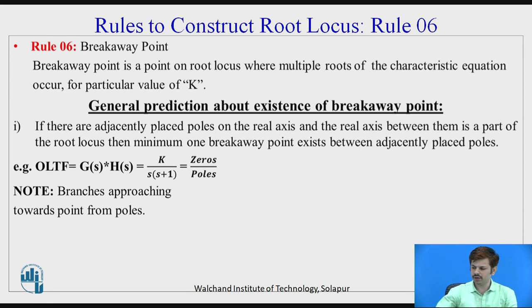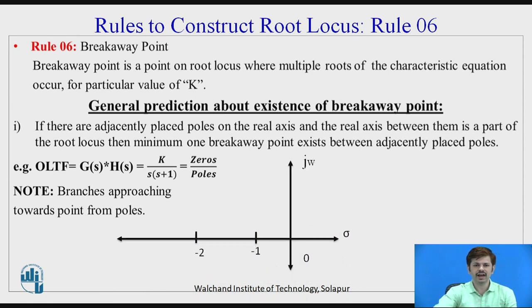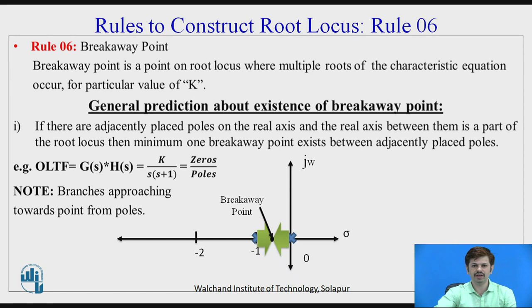For example, the open loop transfer function given is K divided by s(s+1). From this, we have two poles at zero and minus one respectively, and the root locus is going to exist between zero and minus one. From each pole, one branch is going to start. So we have two poles, two branches start, and they approach toward a common point called the breakaway point.